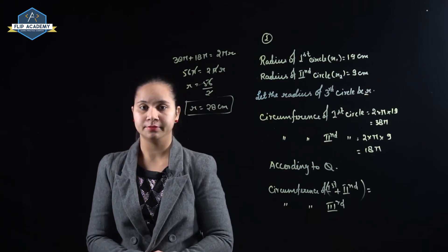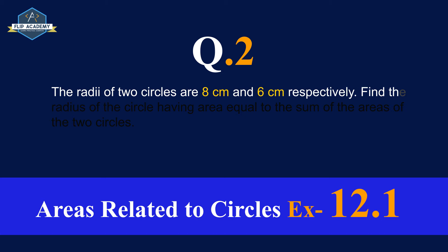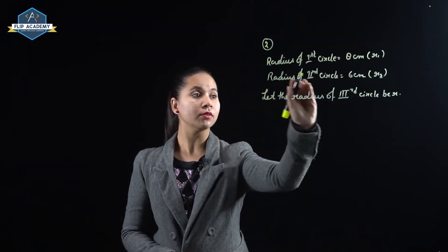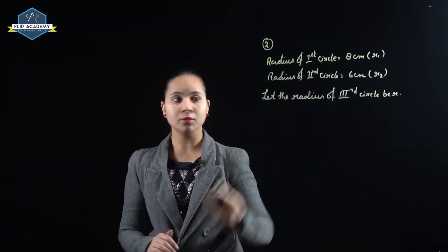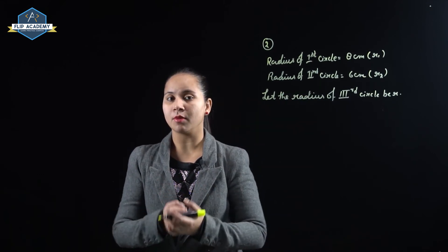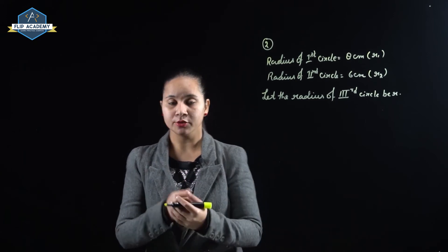Area related to circle exercise 12.1 question number second. The radii of two circles are 8 cm and 6 cm respectively. Find the radius of the circle having area equal to the sum of the areas of the two circles. So radius of first circle is 8 cm and radius of second circle is 6 cm. We assume radius of third circle is equal to r. And the given condition is the sum of areas of two circles is equal to the area of third circle.